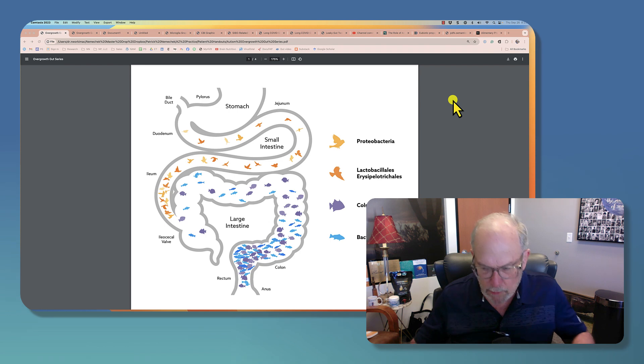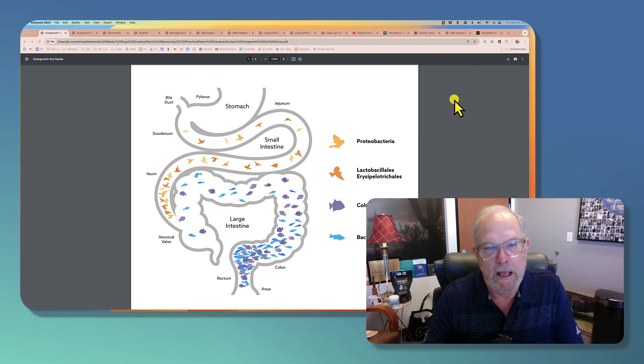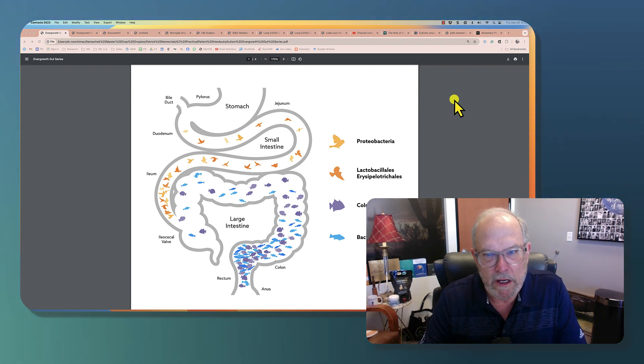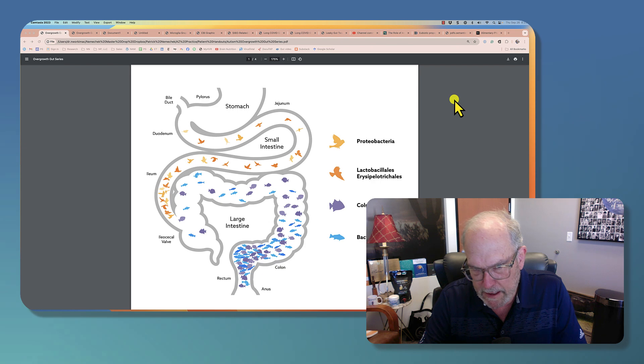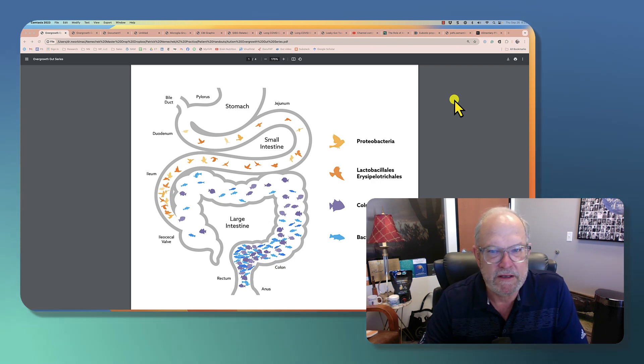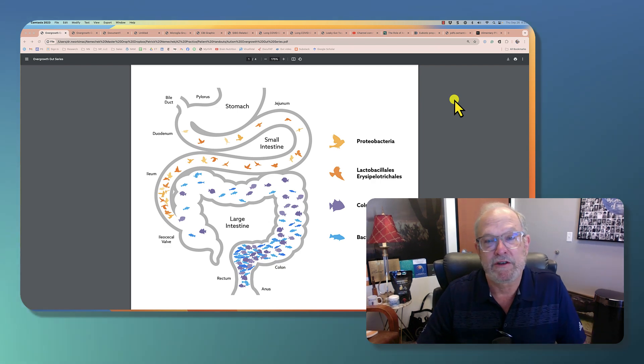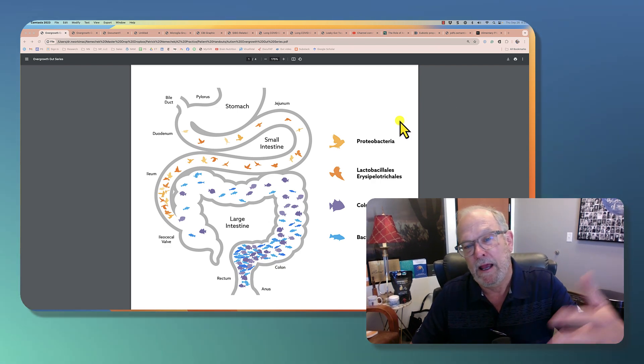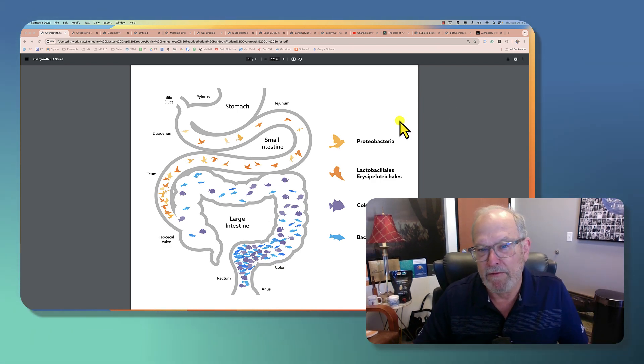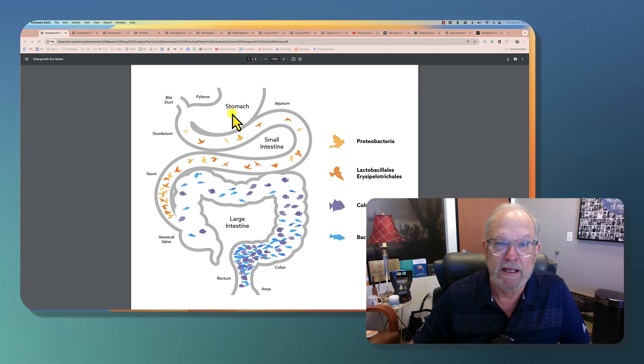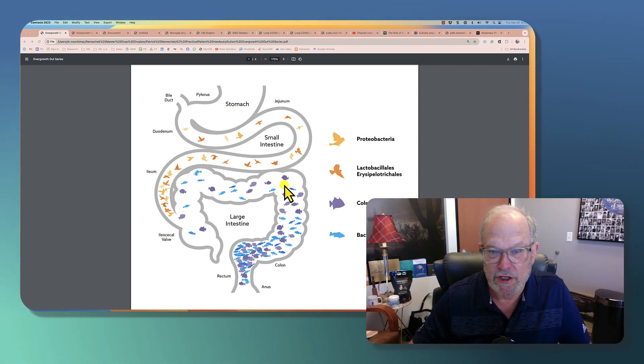Alright, Rifaximin. Why do we use Rifaximin over other antibiotics? Well there's several reasons but first let's talk about what we're using it for. So this graphic that you see here is an outline, a very simplified outline of the balance of your intestinal bacteria. So you have the stomach flowing into the small intestine, into the large intestine or colon.